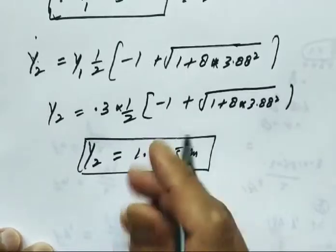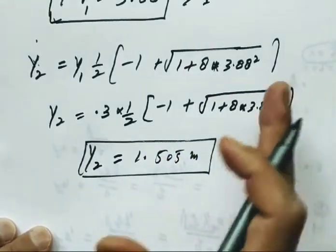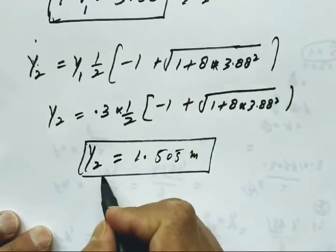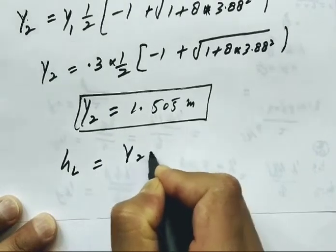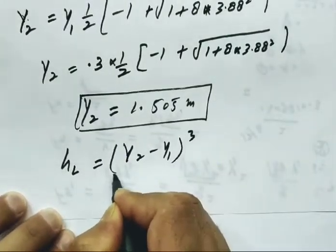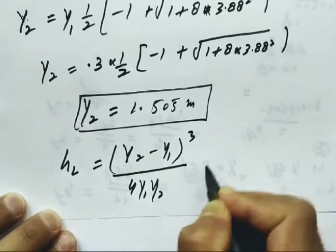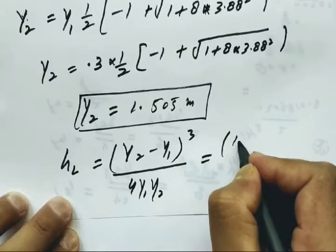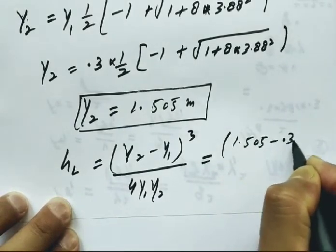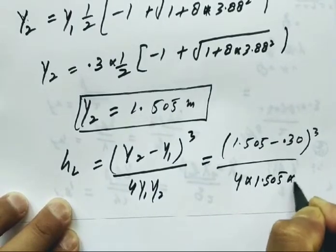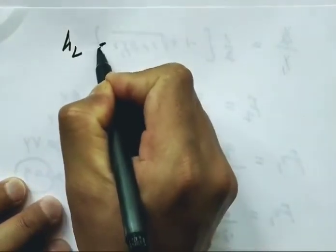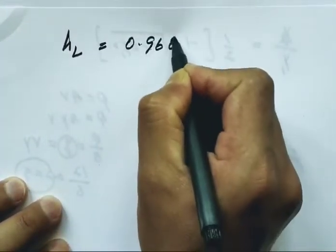Y2 is the depth of flow on the downstream side of the jump. Now we can calculate head loss. HL equals (y2 minus y1) whole cube divided by 4 y1 y2. Putting all the values: (1.505 minus 0.3) whole cube divided by 4 into 1.505 into 0.3. The value of head loss is 0.968 meters.